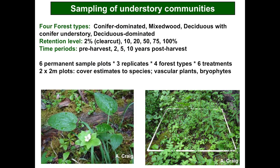We looked at all four forest types — conifer dominated, mixed with deciduous, deciduous with conifer understory, and deciduous dominated — the four main forest cover types at EMEND, and the full range of harvesting retention treatments, all time periods from pre-harvest to five and ten years post-harvest, in the six core permanent sample plots John mentioned. There are three replicates of each in each of the four forest types for each of the six treatments. In a two-by-two meter plot we estimated cover to species for vascular plants and bryophytes, and in a five-by-five meter plot we recorded species presence/absence.